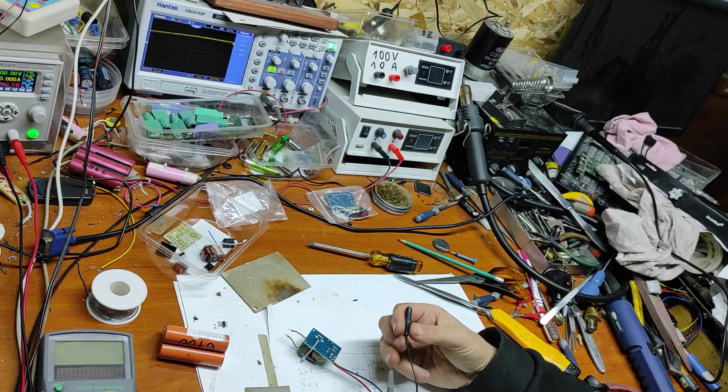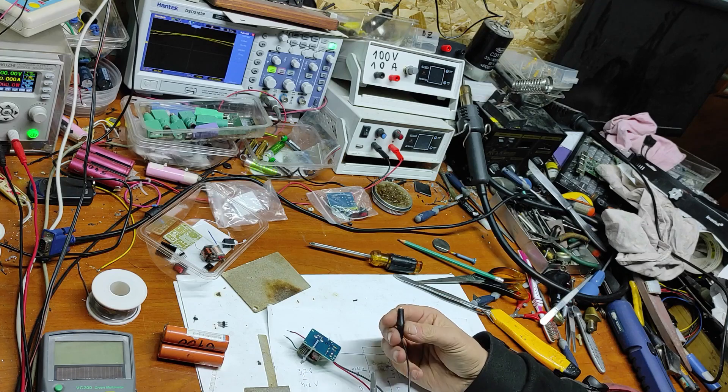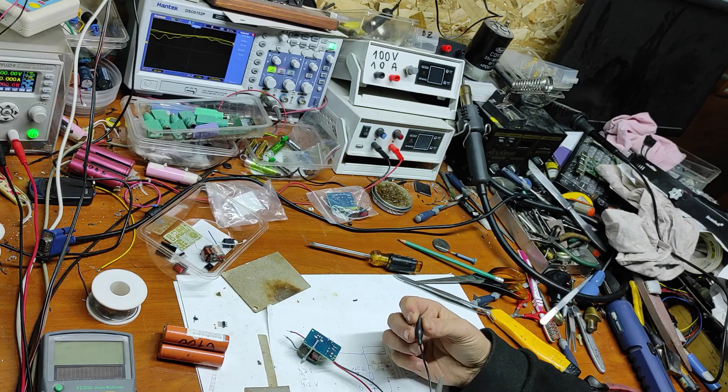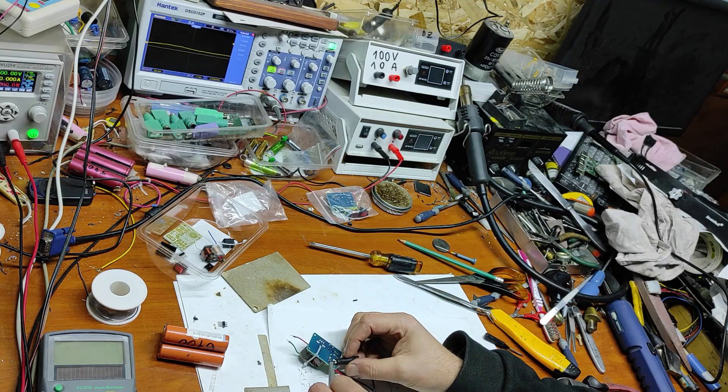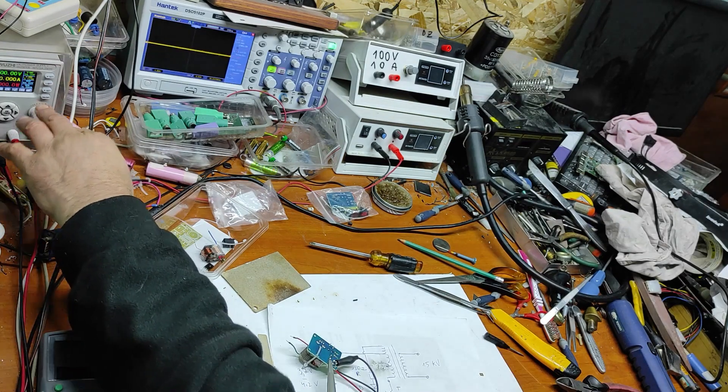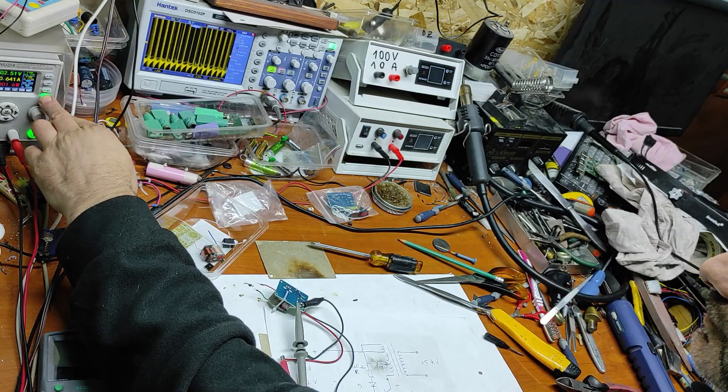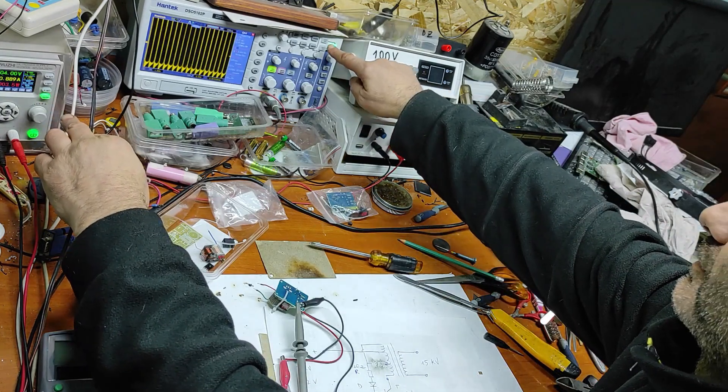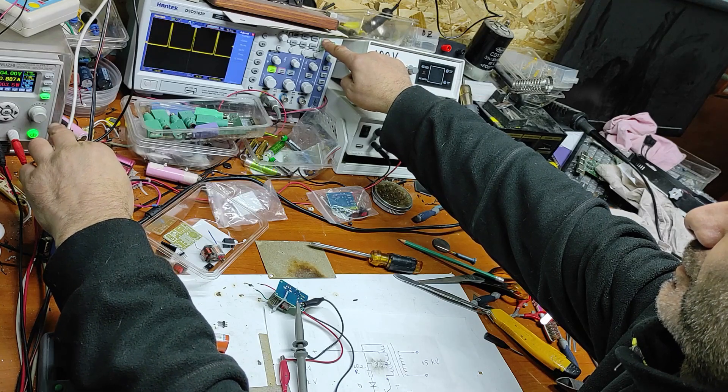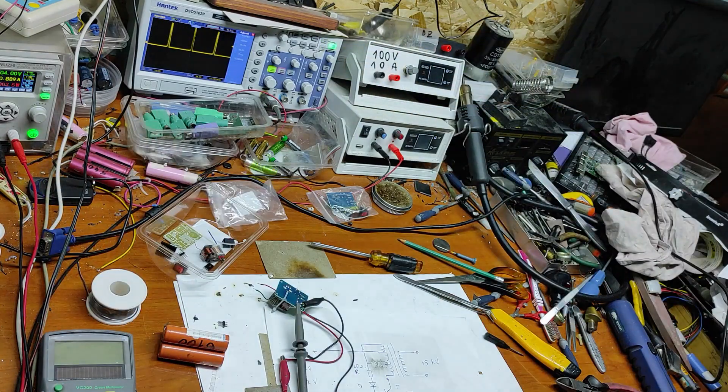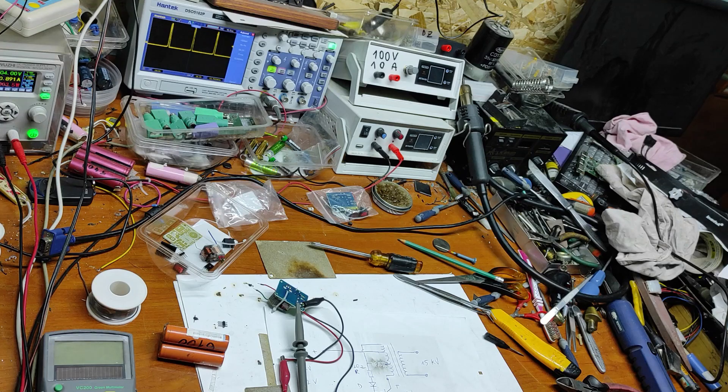Now let's use the oscilloscope to check the frequency of this. I will put it on the primary coil. Now let's start. The frequency is 15 kilohertz.